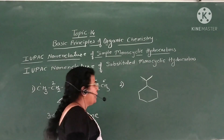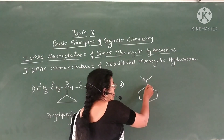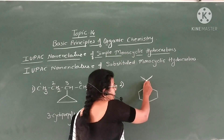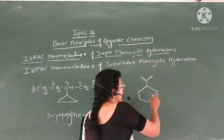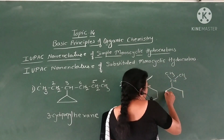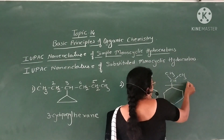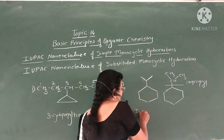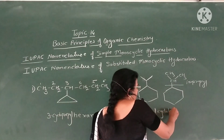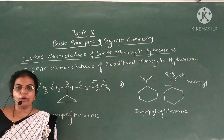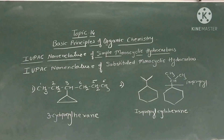This is the second example. This is cyclohexane with six carbon atoms, and there is a branching of an isopropyl group — that is CH(CH3)2. This group is the isopropyl group. Therefore the name of this compound is isopropylcyclohexane. In this way, IUPAC names for substituted monocyclic hydrocarbons are given. Thank you very much.